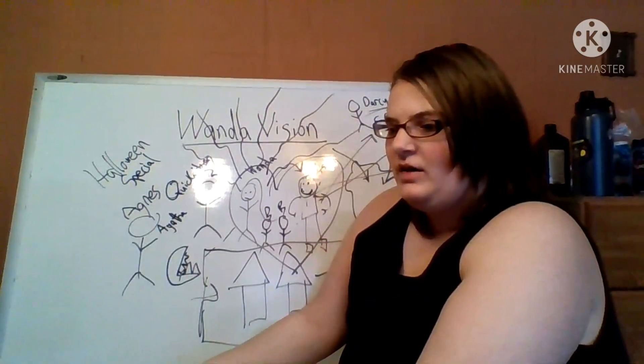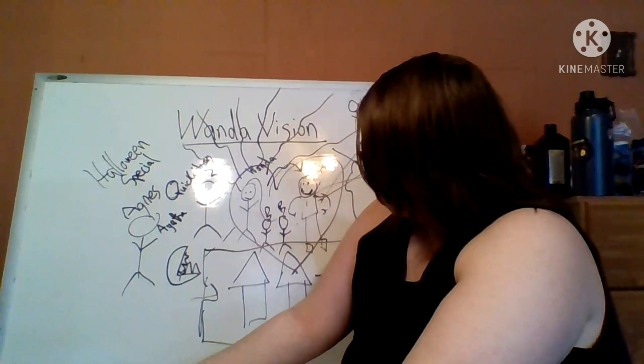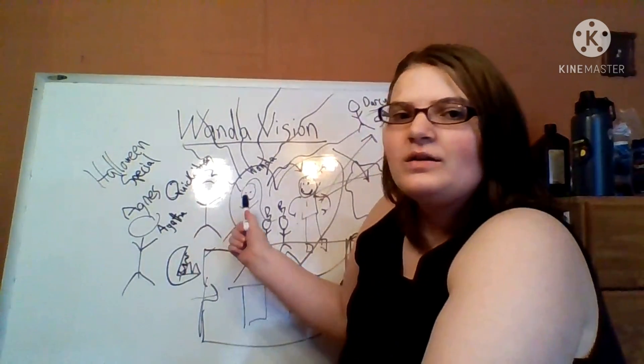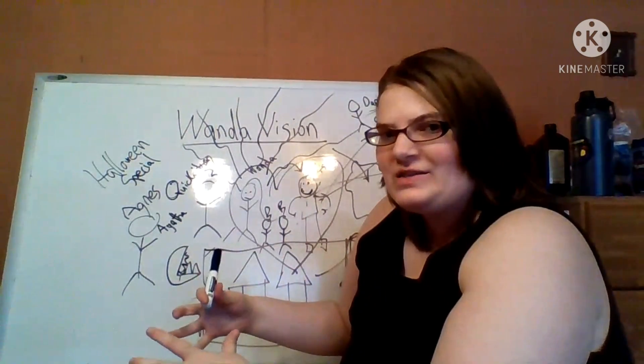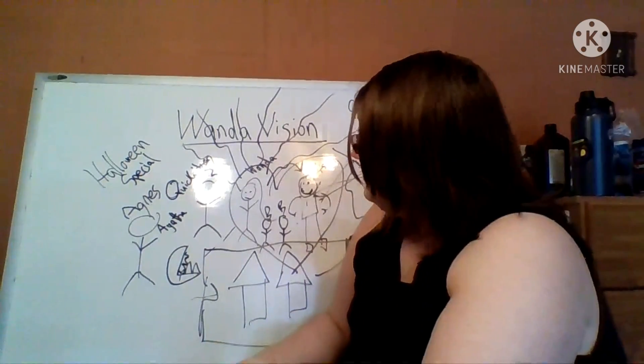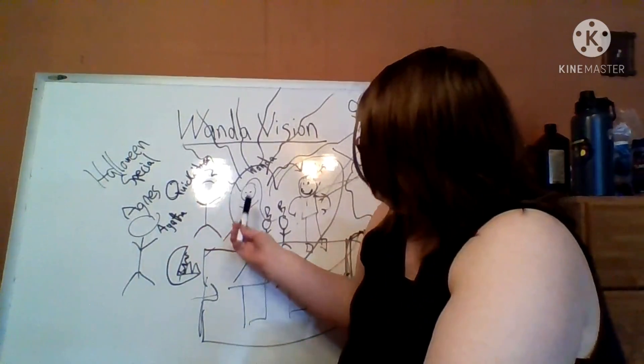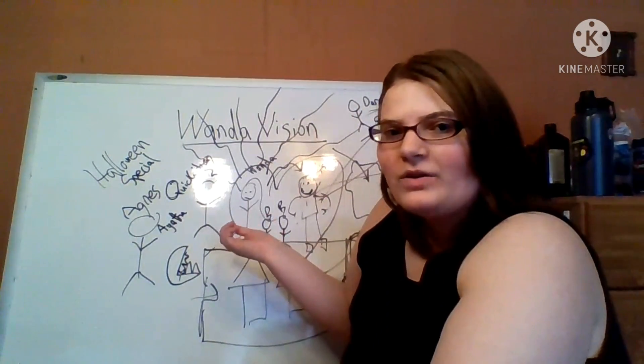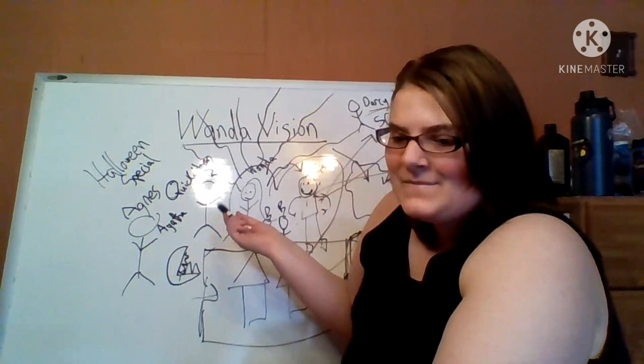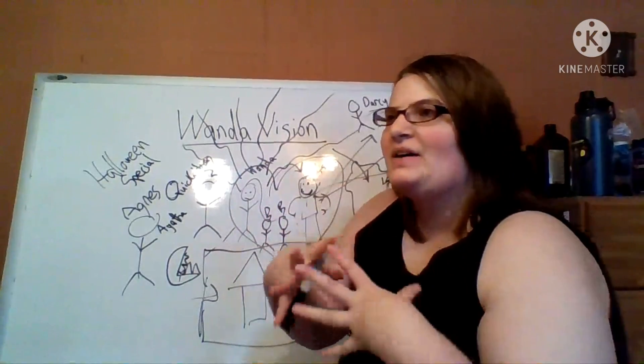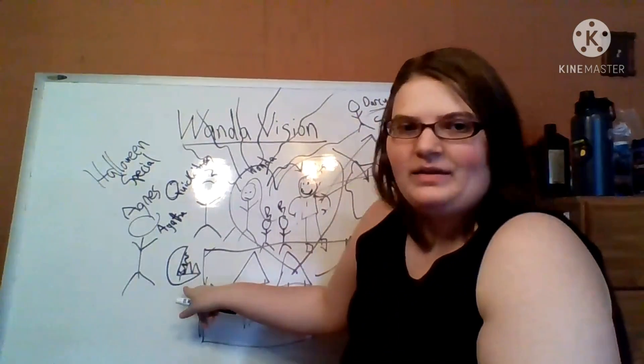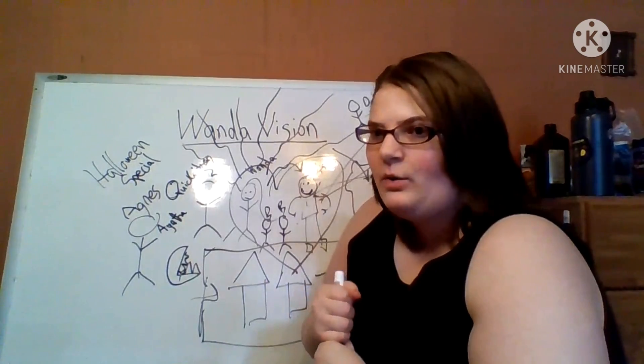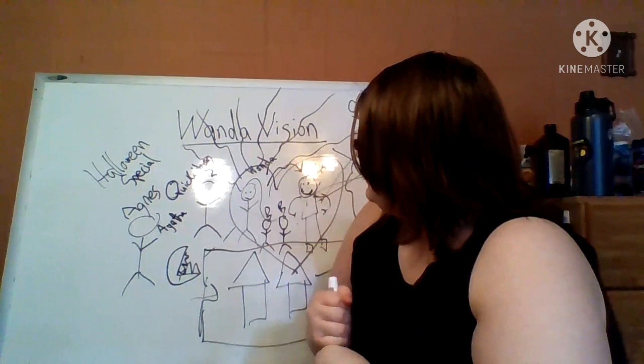And then Vision comes back and is like, Wanda, I'm dead or something. And then that makes Wanda break out of this delusion that she's created. And that means Agatha has to confront Wanda about everything and try and force her back into the delusion so she can keep feeding off of her magic powers.